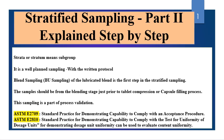Blend Sampling or BU sampling of the lubricated blend is the first step in Stratified Sampling. Once you have done granulation or blending for capsule filling or tablet compression, the last stage — the lubricated blend or lubrication stage — is considered for BU sampling. The sample should be taken from the blending stage just prior to tablet compression or capsule filling. This is a part of process validation.